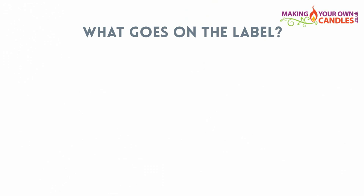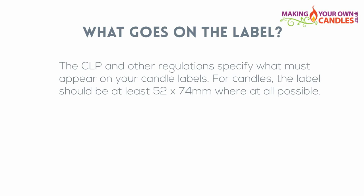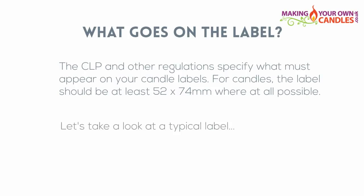What you need to put on the label and the format it takes is governed by the CLP and other regulations. For candles, you should use a label that is at least 52mm by 74mm — that's roughly 2 inches by 3 inches — where at all possible. So let's take a look at what this means in practice.